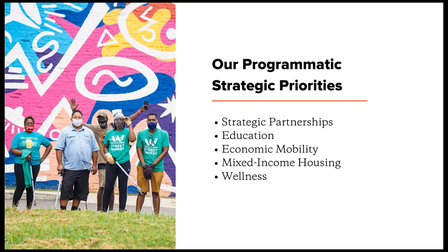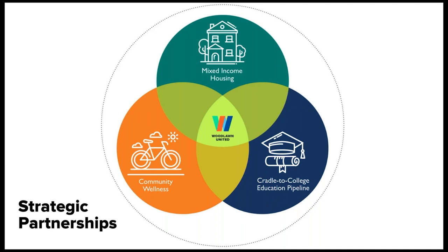Together, 40 community partners are working to end intergenerational poverty, but Woodlawn United is leading the way — we are the consistent community quarterback carrying the vision for the neighborhood every day, with offices based in the neighborhood. Our partners range from the City of Birmingham to the Housing Authority to our Early Learning Center to our newest addition — a high-quality K-6 charter school opened in the neighborhood — and even our Federally Qualified Health Center, Christ Health Center. We wanted to make sure that if you lived in the Woodlawn neighborhood, you had access to everything you needed.